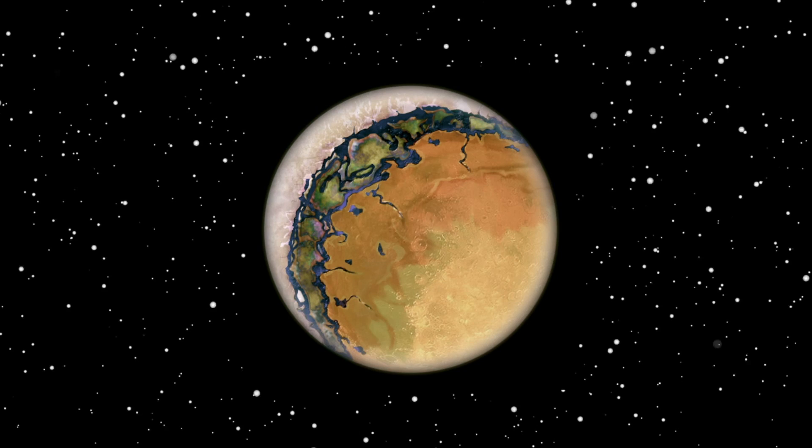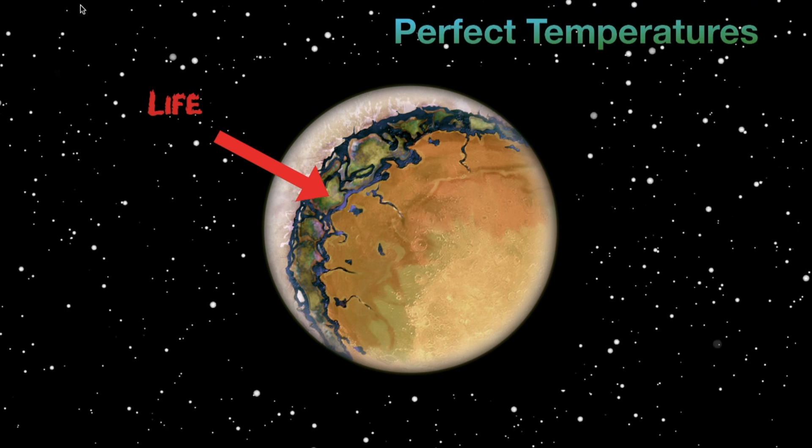In these types of systems, it is predicted that life will appear between the light and darkness, as it is there where we get the perfect temperatures for life like on Earth.